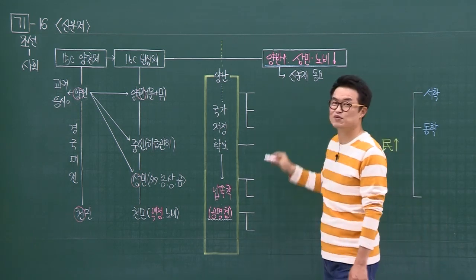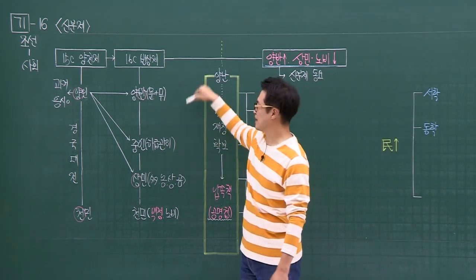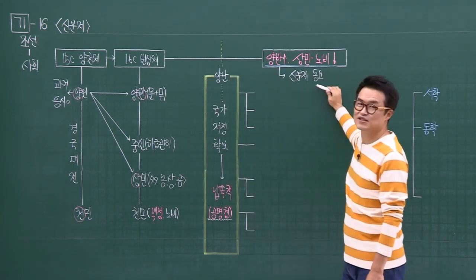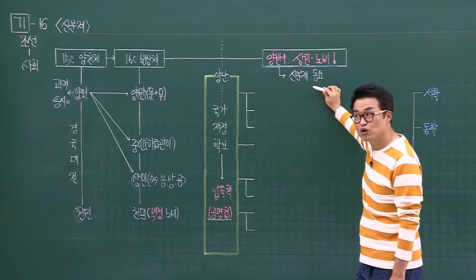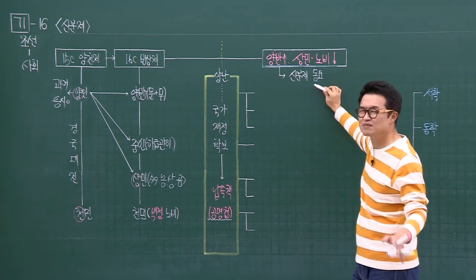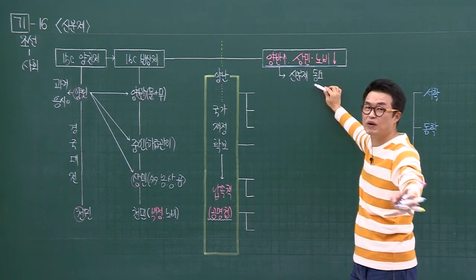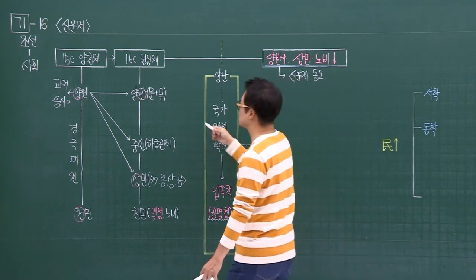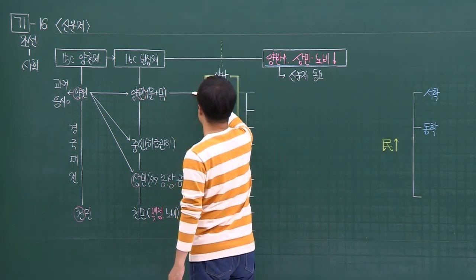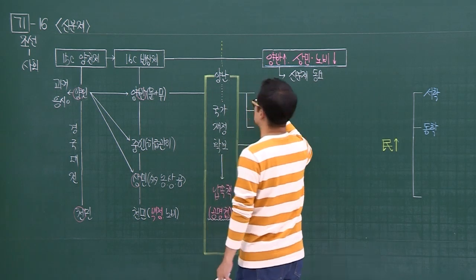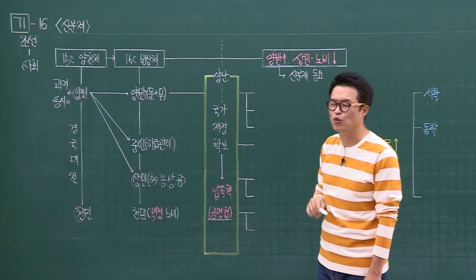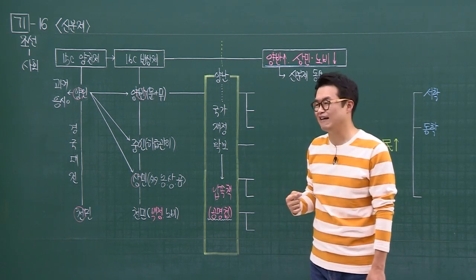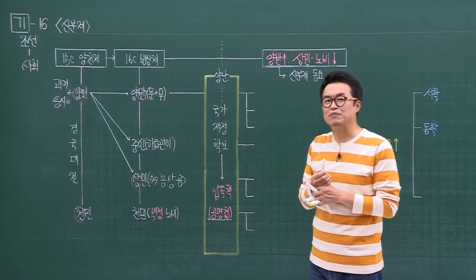조선 후기는 이 신분제를 받침하고 있었던 학문체계가 성리학이었는데, 성리학으로는 이 시대를 설명하기 참 어렵겠구나 라는 생각이 들죠. 이런 느낌이 나중에 문화 파트에서 실학이 나오는 배경이 되는 거예요. 이렇게 되면서 양반층도 나뉩니다. 조선 후기 환국정쟁에서 살아남은 세력들, 양반이라고 해서 다 양반이 아닌 거예요.